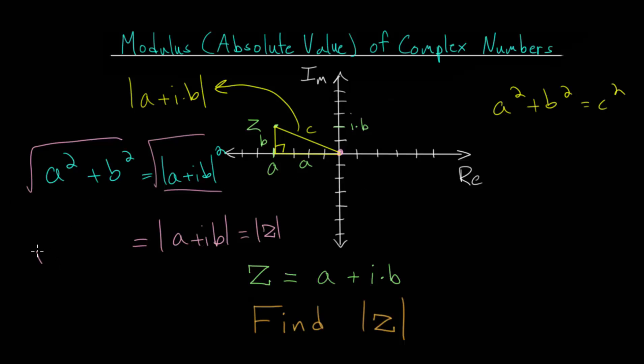And on the left-hand side, we have the square root of a squared plus b squared. And this right here is a formula that we can use to find the modulus or absolute value of any complex number.